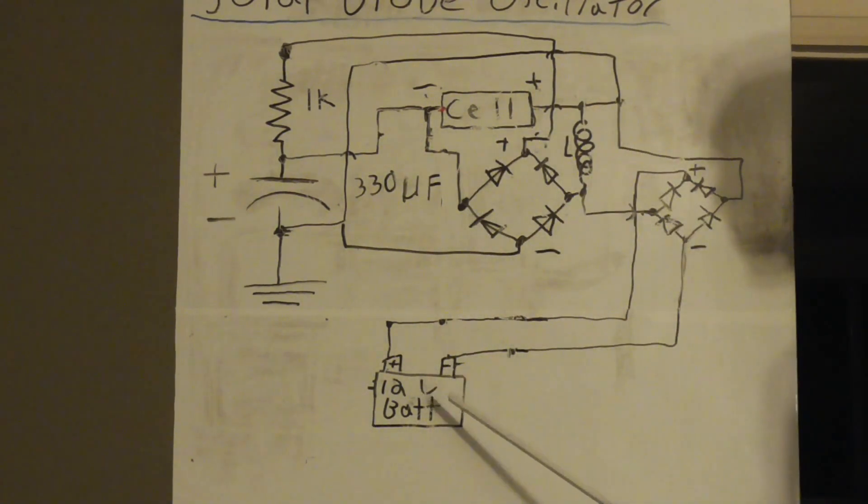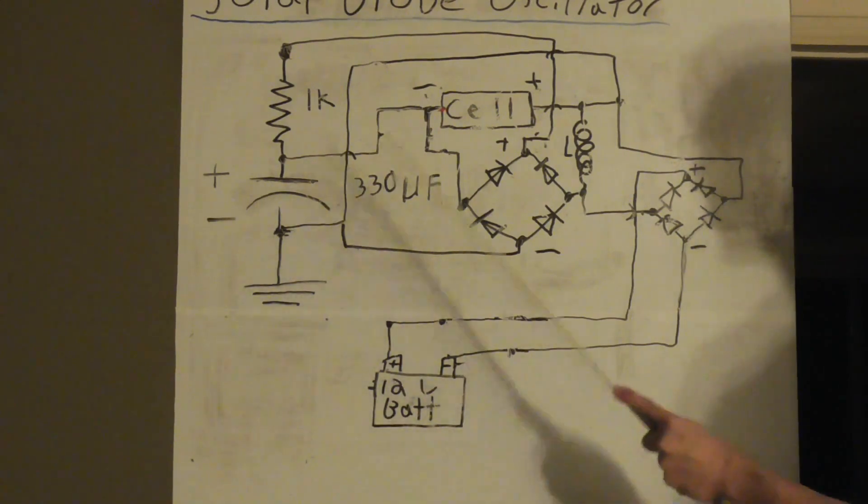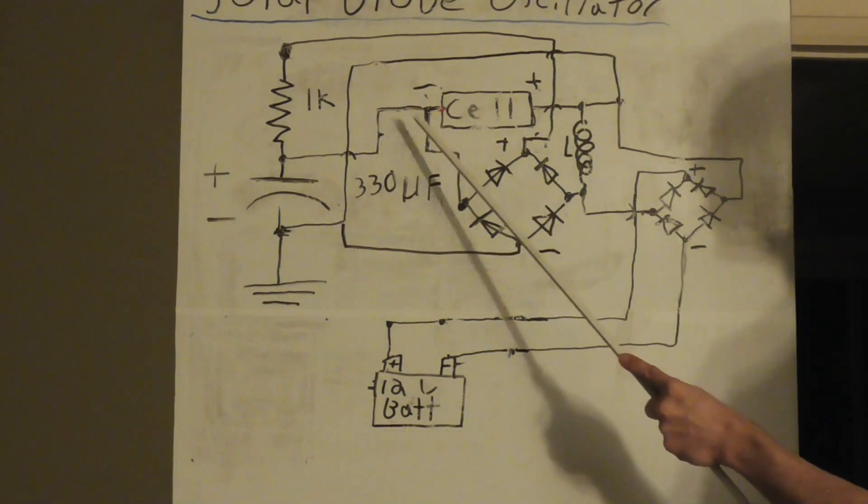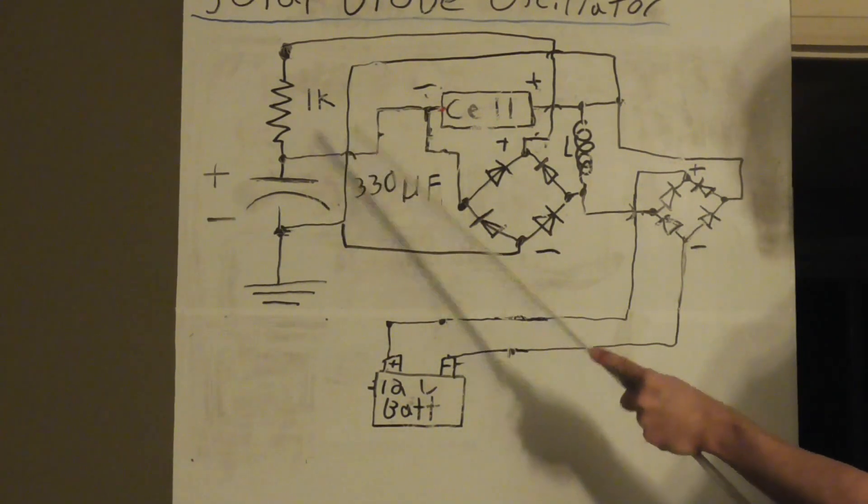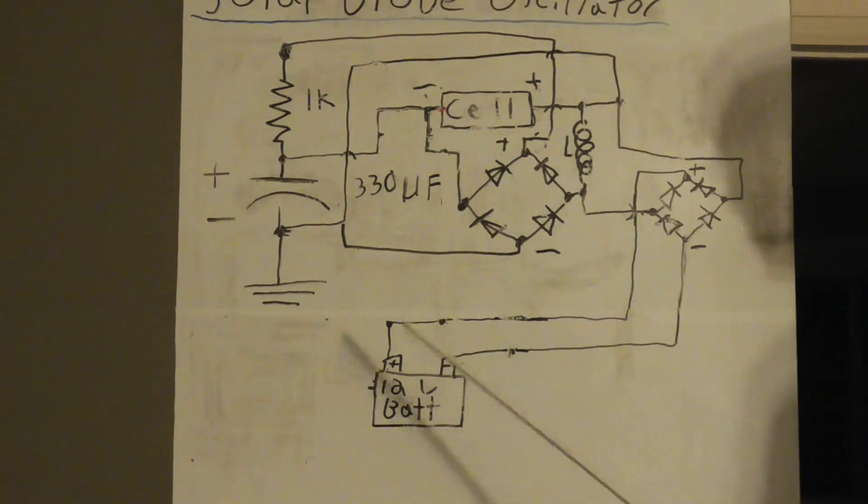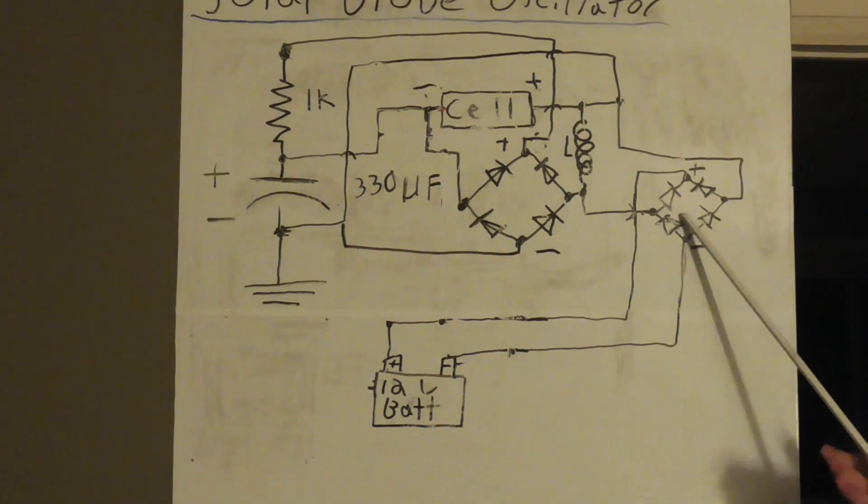As you see, the battery is not connected to the input anymore because we've eliminated the voltage regulator. We don't need it because we're dealing with a much lower voltage trigger for the night version.